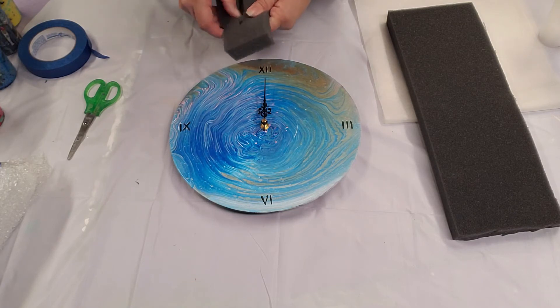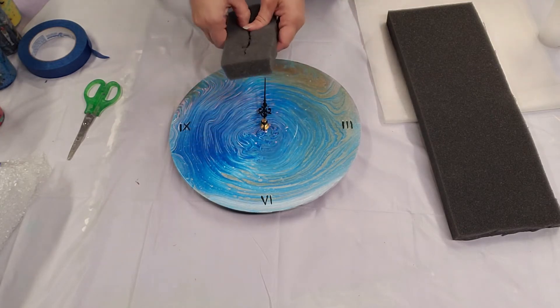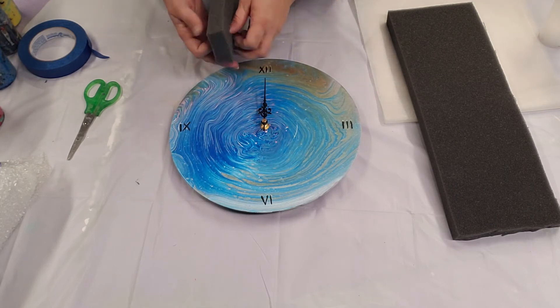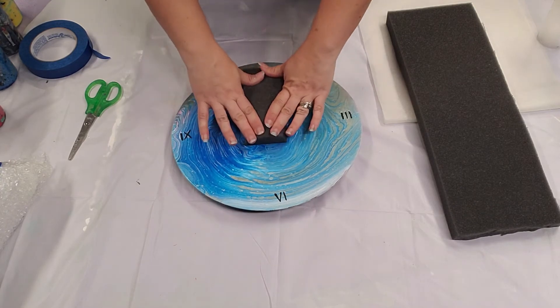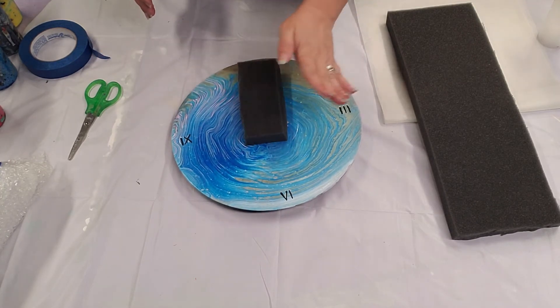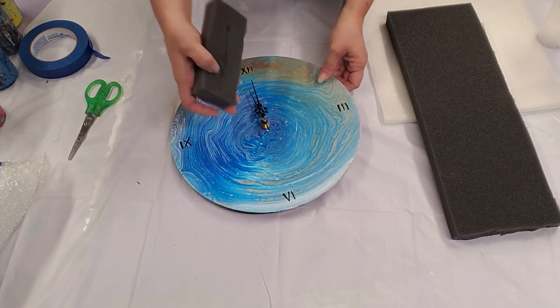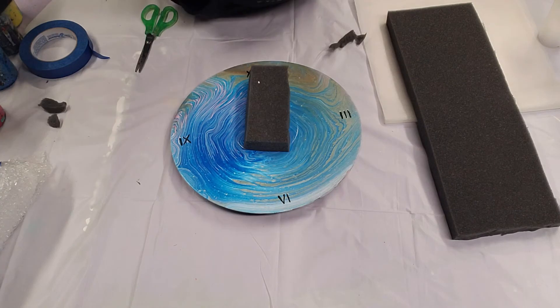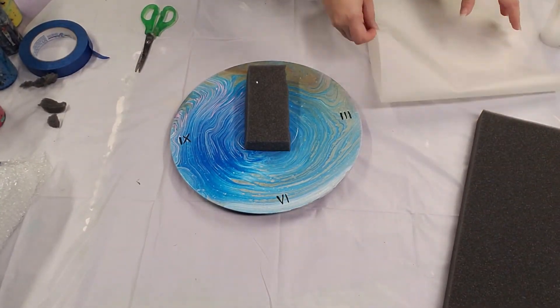But basically I'm just gonna make a spot for the clock mechanisms to go in so that they don't get damaged in shipping. So that was a pretty messy way of doing that, but that should work. And then you basically just gonna place it around there and that will prevent them from getting bent and whatnot. So I'm gonna do that a little bit better and then we'll package it up. Okay, I'm pretty satisfied with that.